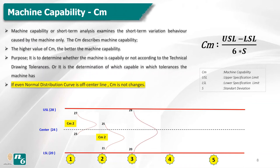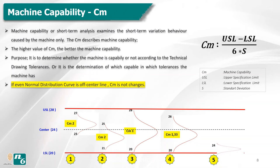In the third sample, the specification limits 28 minus 20 are divided by a narrower spread, giving a CM of 8. Then in the next sample, CM is 1.33, calculated as (USL − LSL) / (26 − 20). After that, CM is 4, which is better than the other samples. And in the last sample, CM equals (28 − 20) / (24 − 22).